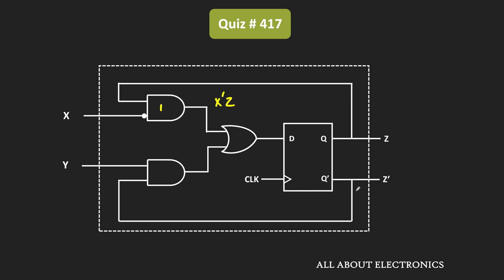Similarly, Z' is the input to the second AND gate, so the output of the second AND gate is equal to Y dot Z'. These two outputs are given to the OR gate, so the output of the OR gate — that is, the D input — is equal to X'Z + YZ'.